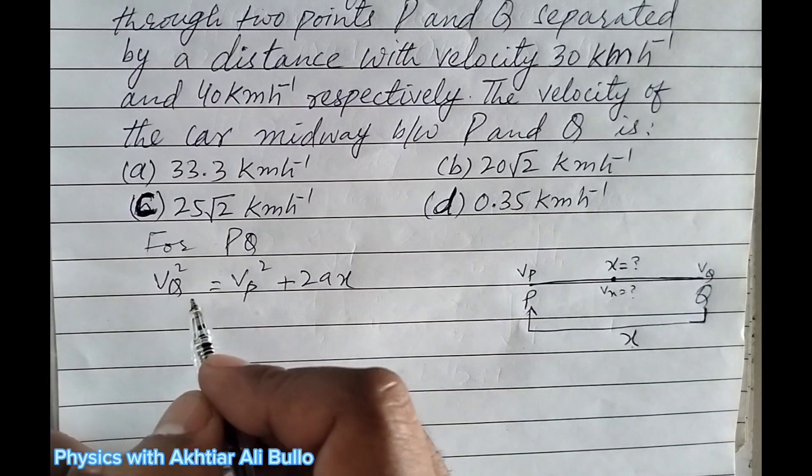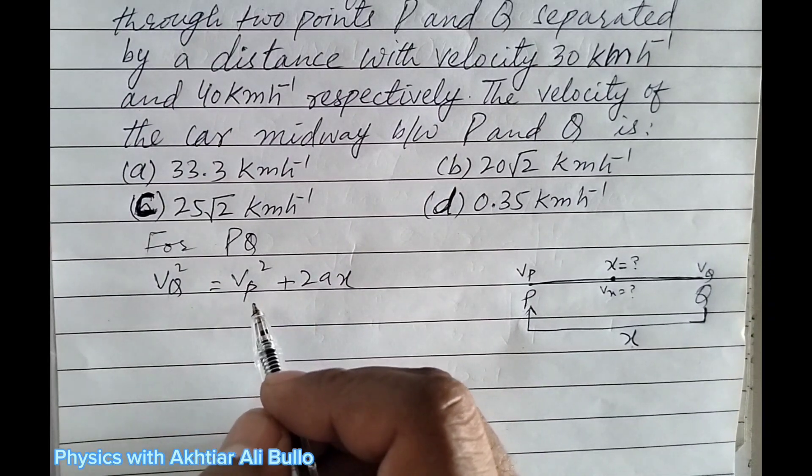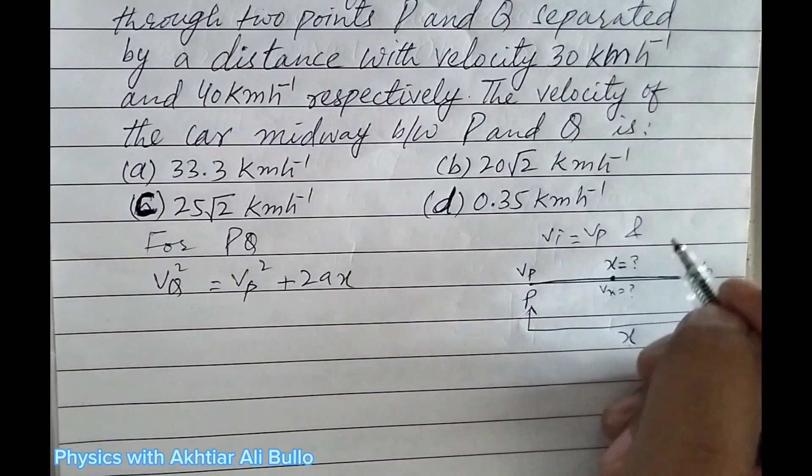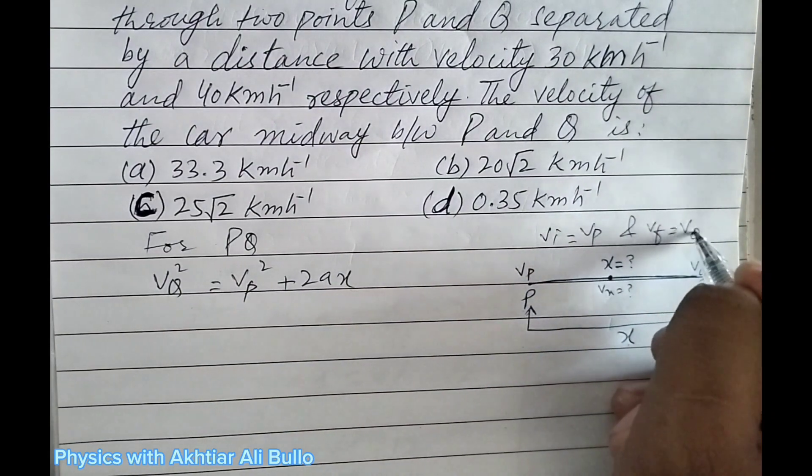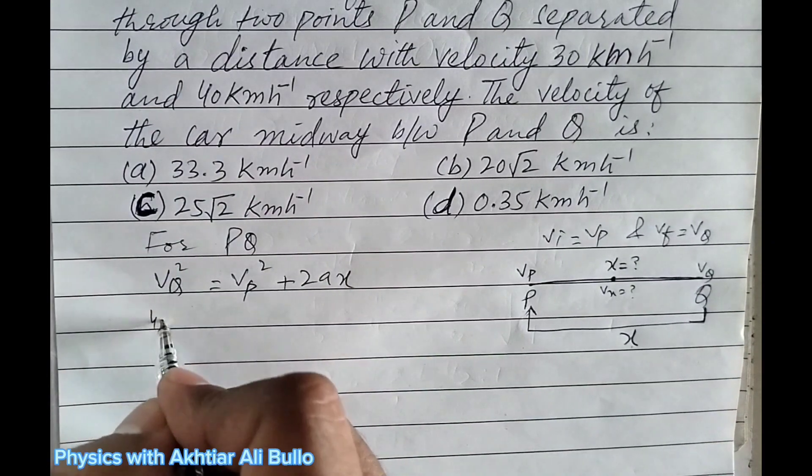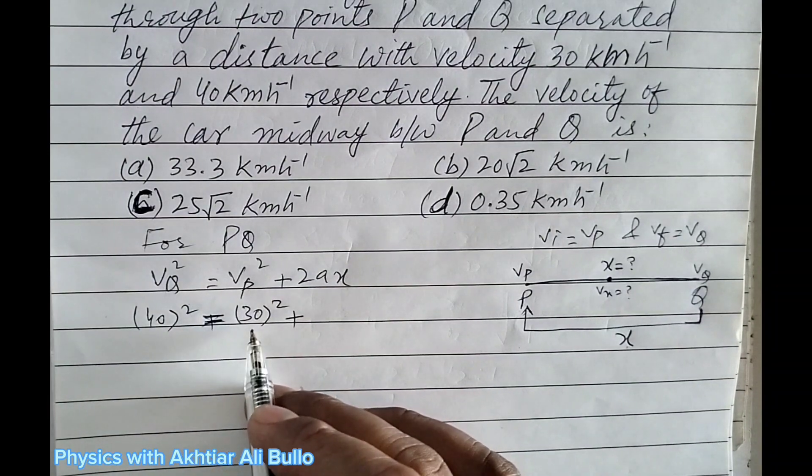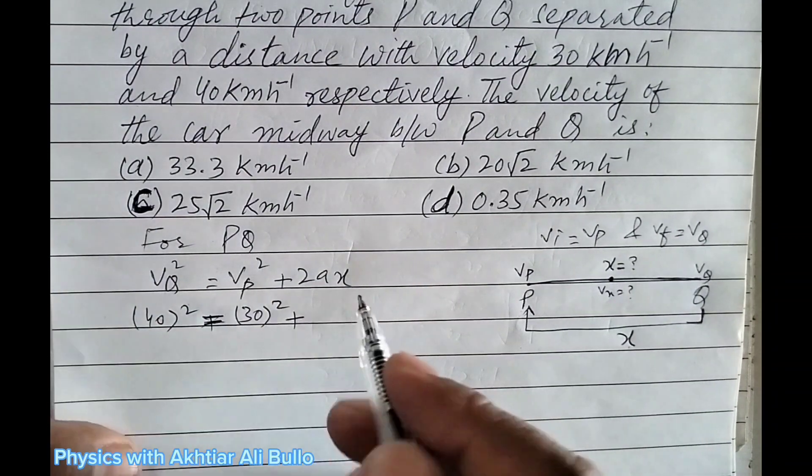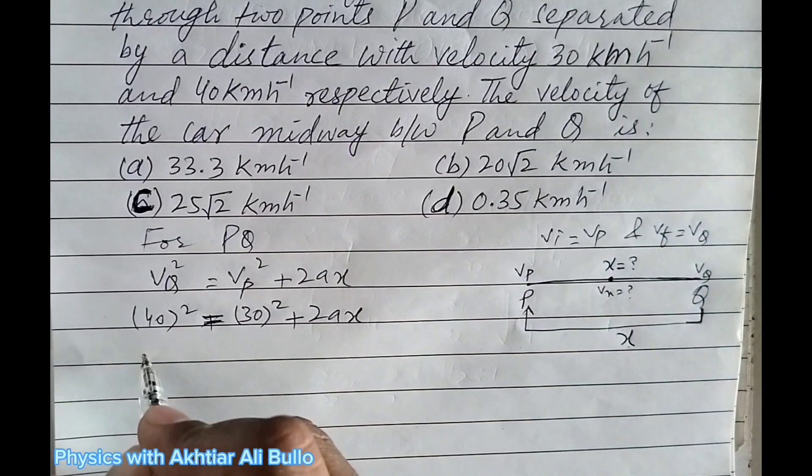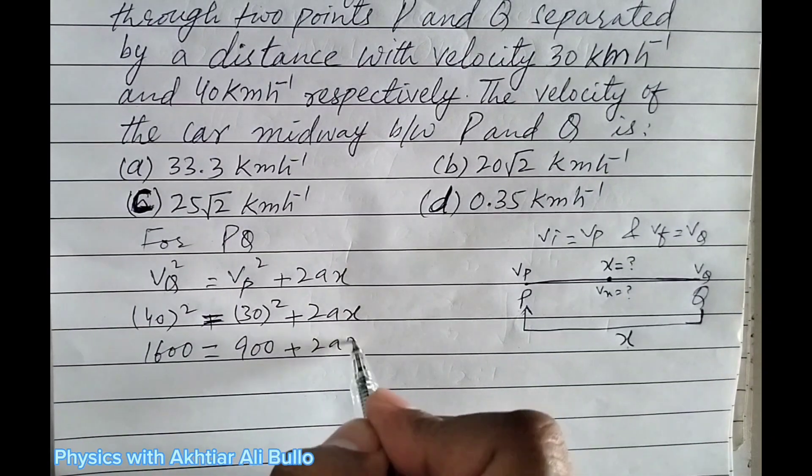So Vq is Vf and Vp is Vi. Vf is 40, so 40² plus 2aX. The square of 40 is 1600 = Vp², which is 30, so 30² plus 2aX. The square of 40 is 1600 = the square of 30 is 900 plus 2aX.